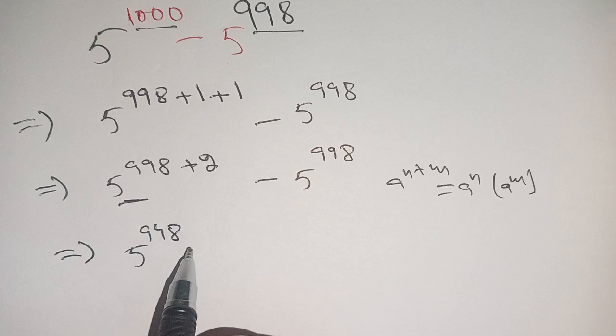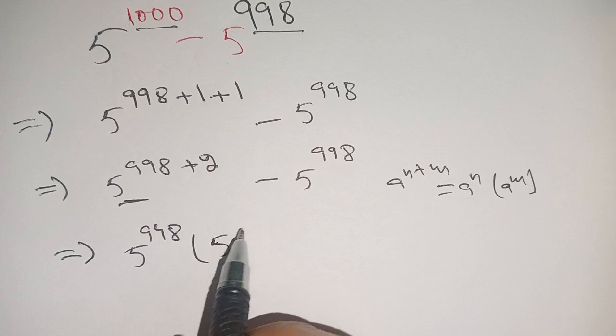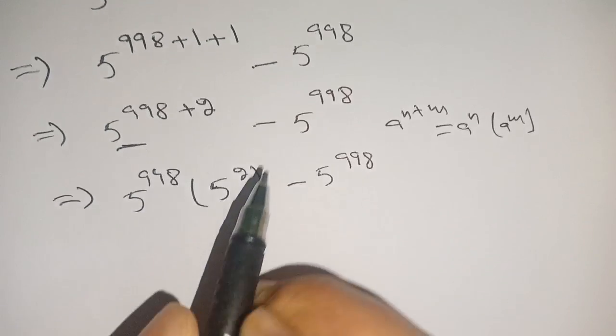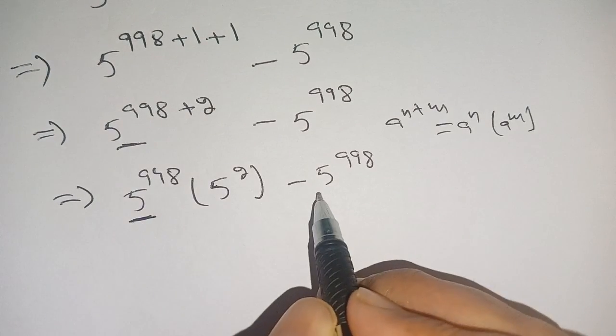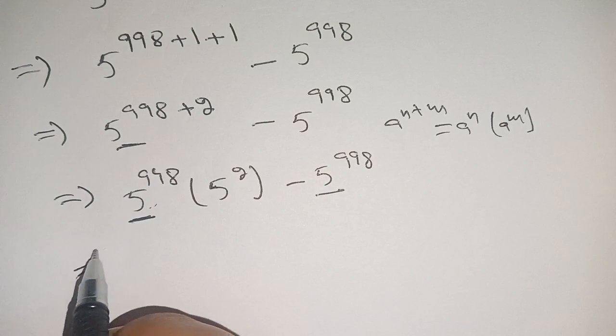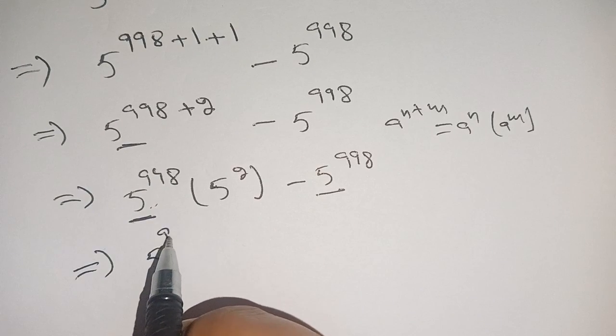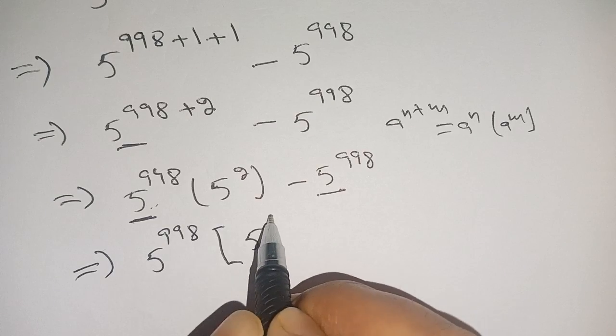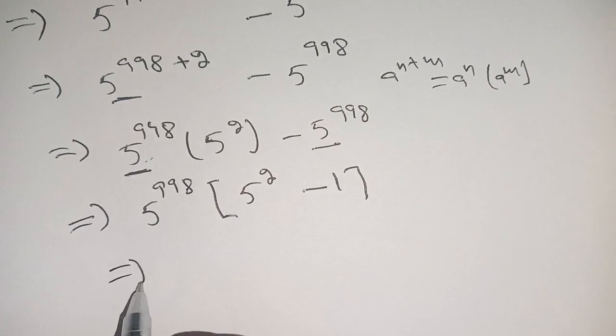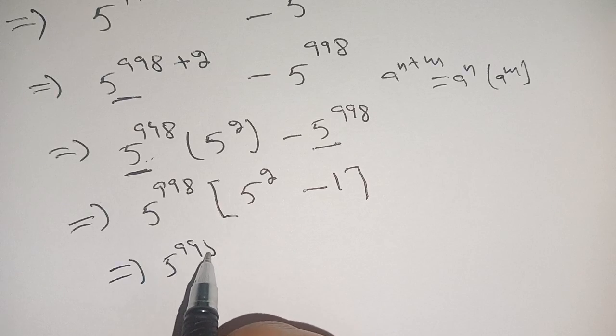We get 5 power 998 times 5 power 2 minus 5 power 998. From here we take out 5 power 998 common. We get 5 power 998 times 5 power 2 minus 1.